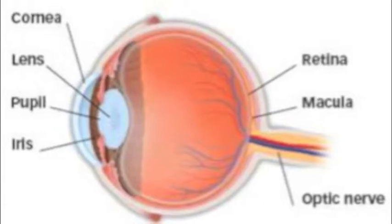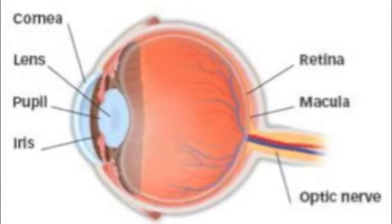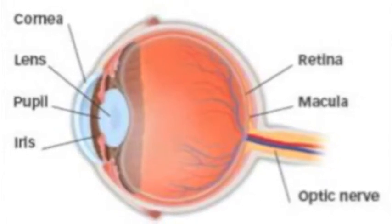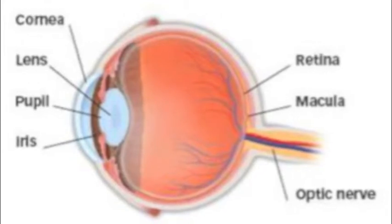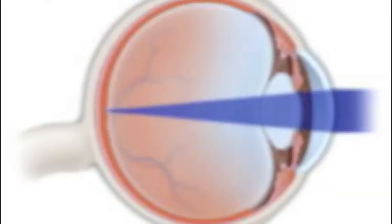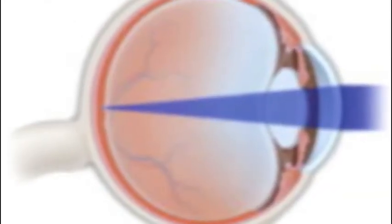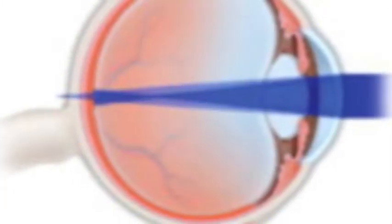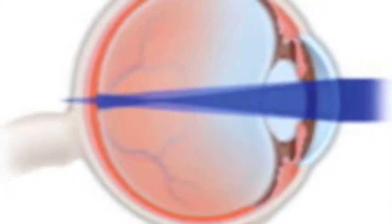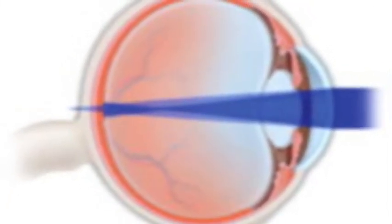When either the cornea or lens of your eye are distorted, your vision will then also appear distorted. This is because the light goes through them and should focus those light rays on the retina, but in an eye with astigmatism, those rays focus in front of or beyond the retina.